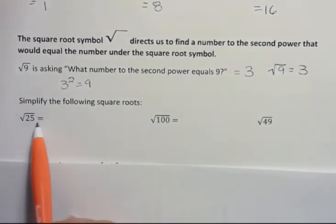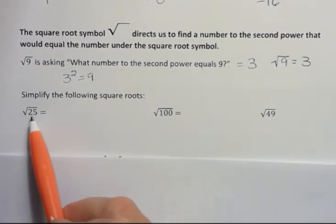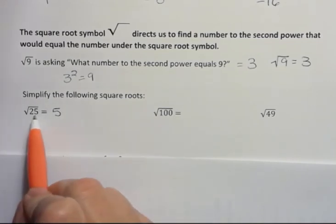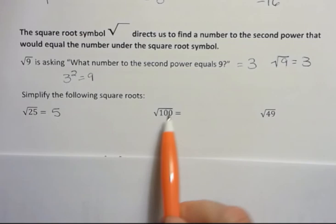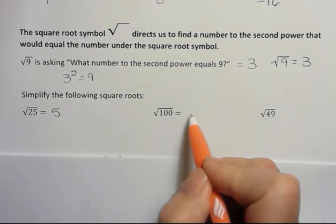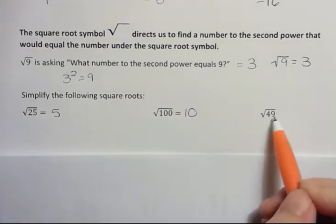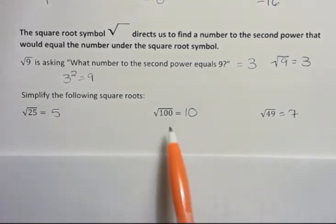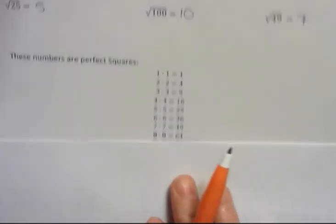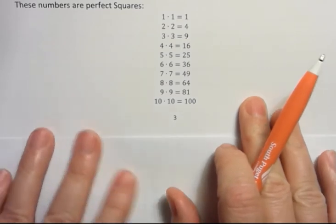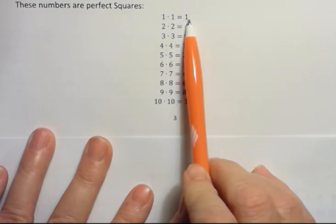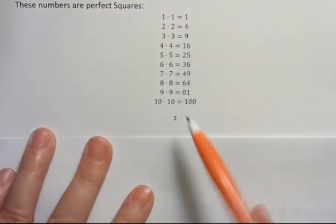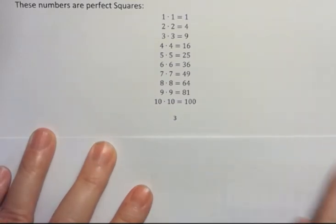Simplify the following: the square root of 25 is asking what number to the second power would equal 25 — that would be 5, because 5 times 5 is 25. What number to the second power would be 100? That would be 10, because the square root of 100 is 10. What number to the second power would be 49? That would be 7. When you see a square root symbol, remember it's asking what number to the second power equals the number underneath. Some common perfect square numbers to become familiar with are 1, 4, 9, 16, 25, and so forth. These are nice to recognize because it makes simplifying quick. Have a fantastic day!